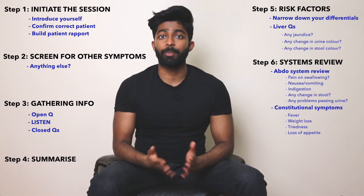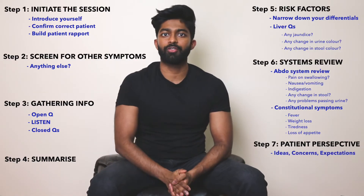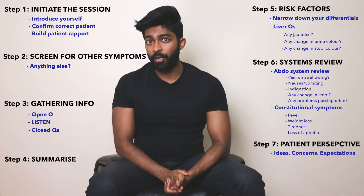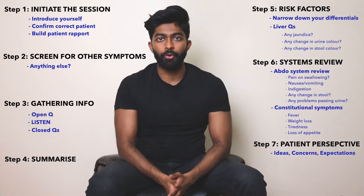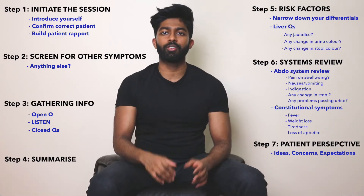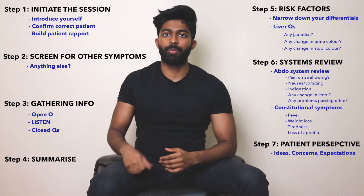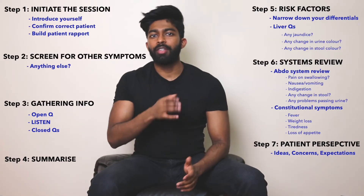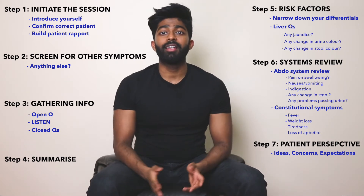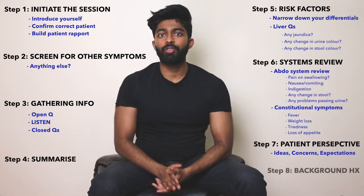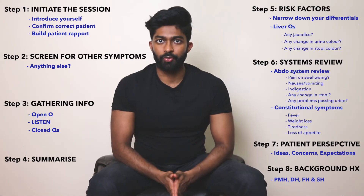Step 7 is the patient's perspective — their ideas, concerns and expectations. So: have you got any idea what might be going on? Is there anything in particular you're worried about? And what are you hoping for from today? It's really important to not just clump all of this together right at the end of your history, but rather be dynamic — put this into your history by picking up on the patient's cues. And then finally, step 8 is the background history: past medical history, drug history, family history, and social history.